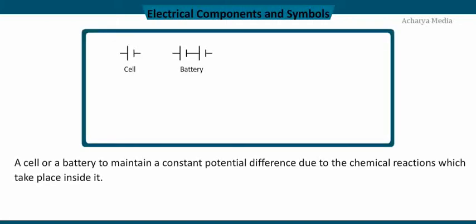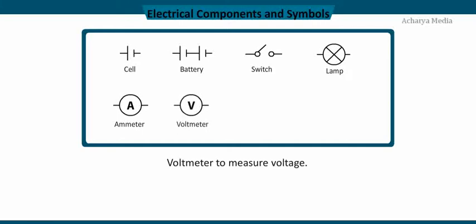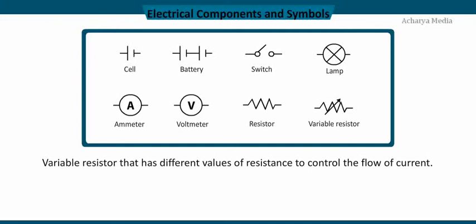Some of the common electrical components are as follows: a cell or battery to maintain a constant potential difference due to the chemical reactions which take place inside it; switch to open or close the circuit; lamp that consumes power to emit heat and light; ammeter to measure current; voltmeter to measure voltage; fixed resistor that has constant resistance to control the flow of current; variable resistor that has different values of resistance to control the flow of current.